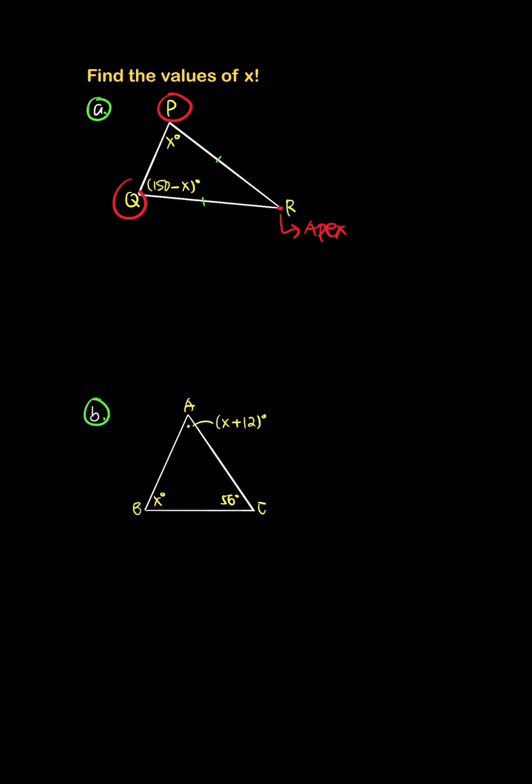When we look at problem 2A, angle P equals angle Q. To find the value of x, we have x degrees equals 150 minus x degrees. This gives us 2x equals 150. So x equals 150 divided by 2, which is 75 degrees.